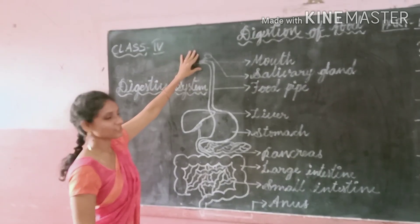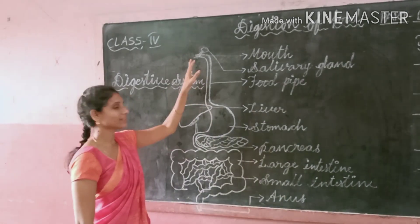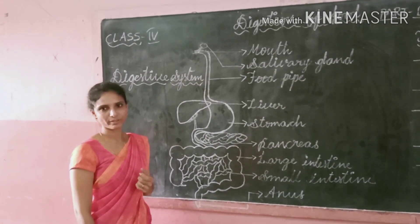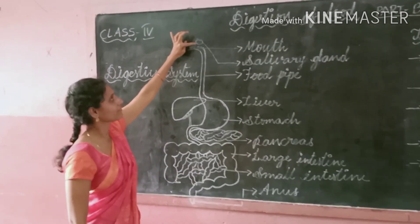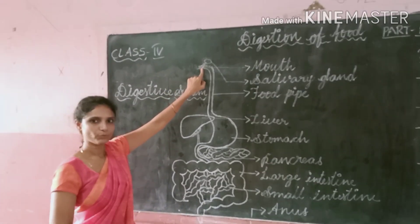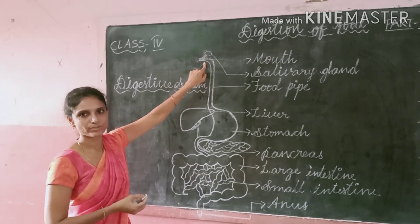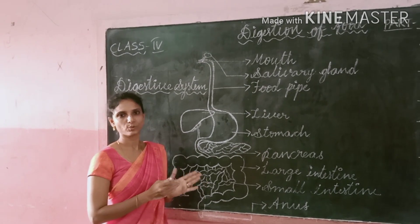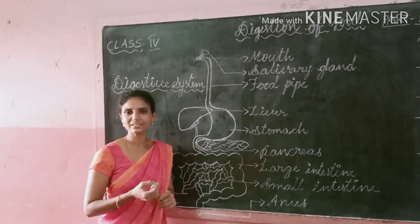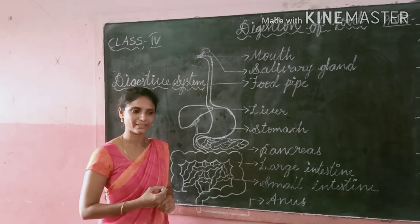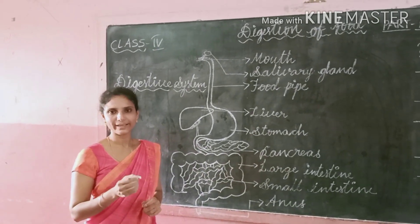The digestion starts with the mouth. When we put food in the mouth, our teeth bite and chew the food. While chewing, the saliva from the salivary glands mixes with the food. This saliva is the digestive juice — it changes the insoluble starch into soluble sugar. That's why while eating starchy food items like bread and rice, you will taste sweetness after chewing.